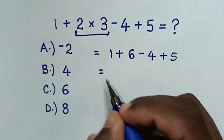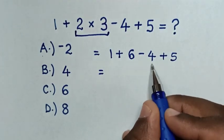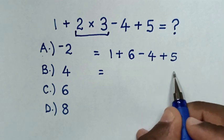Then, it will be equal to 1 plus 6 is 7. 7 minus 4 is 3. 3 plus 5 is 8.